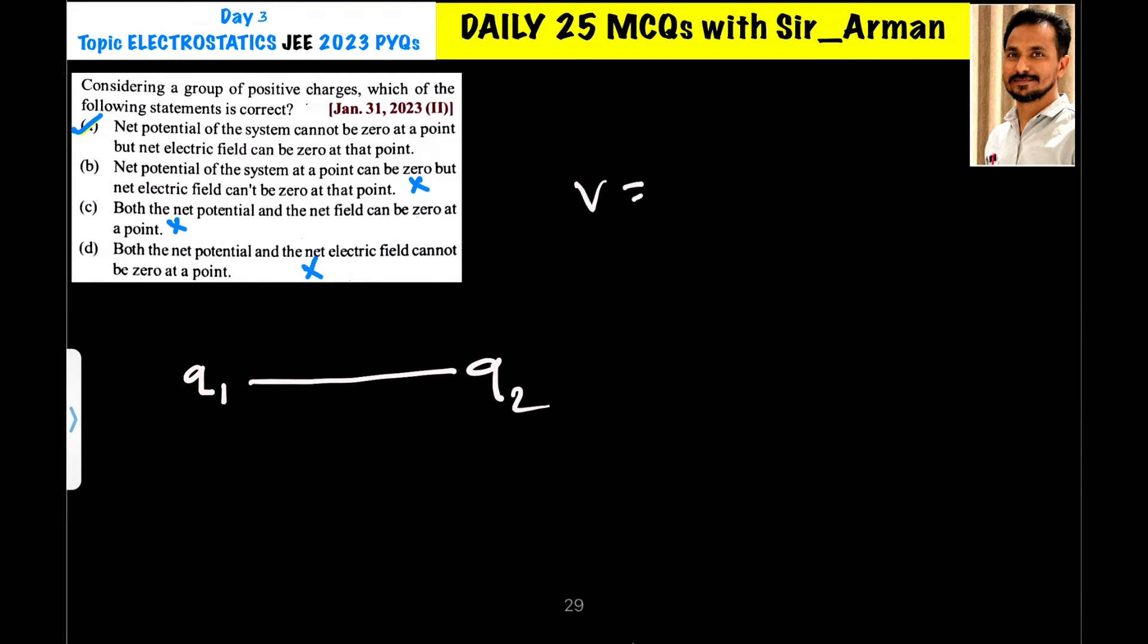Now, the equation for the potential is V equals KQ by R. As the potential is a scalar quantity, then in that case, the potential at any point, let us assume at this point is given by equation KQ by R1, KQ1 by R1 plus KQ2 by R2.